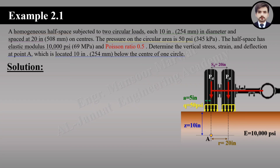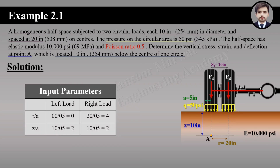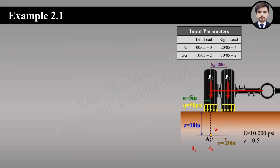In the solution, our first step is to determine the input parameters. In one-layer theory we have two input parameters: R/A and Z/A. For the left load, since point A lies on the central axis, R equals 0, so R/A = 0, and Z/A = 10/5 = 2. For the right load, R is 20 inches (center-to-center spacing), so R/A = 4, and Z/A remains 2.